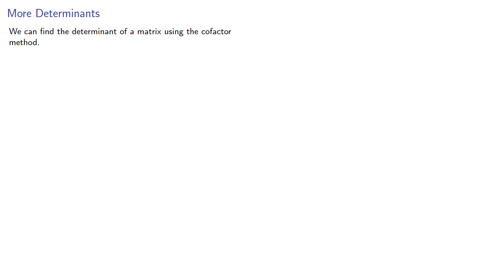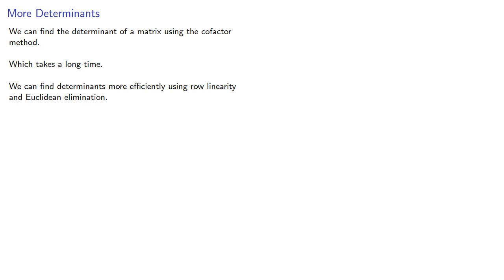We can find the determinant of a matrix using the cofactor method, which takes a long time. We can find determinants more efficiently using row linearity and Euclidean elimination.